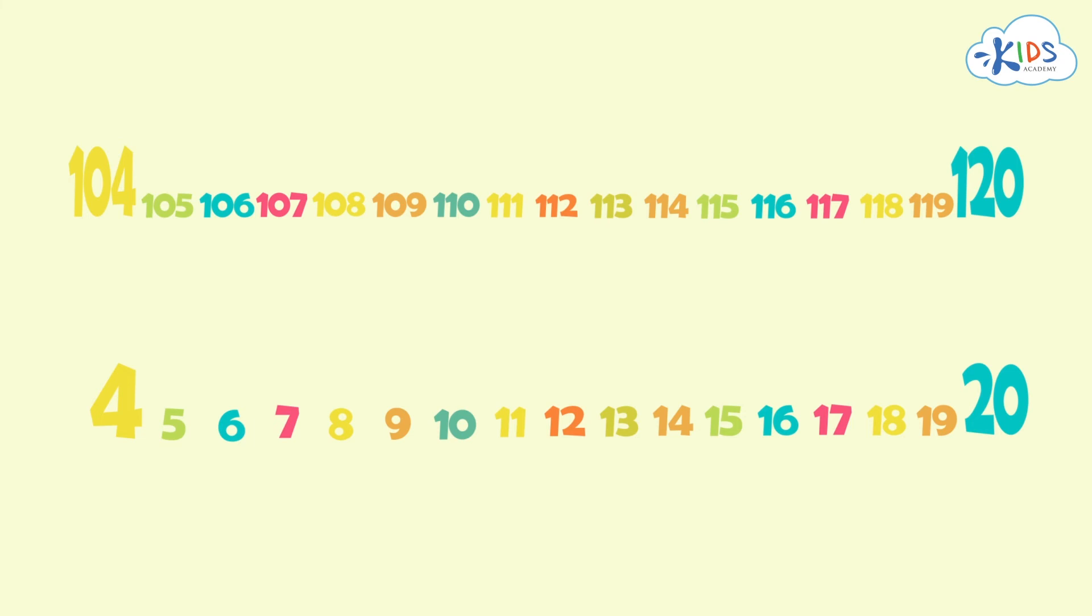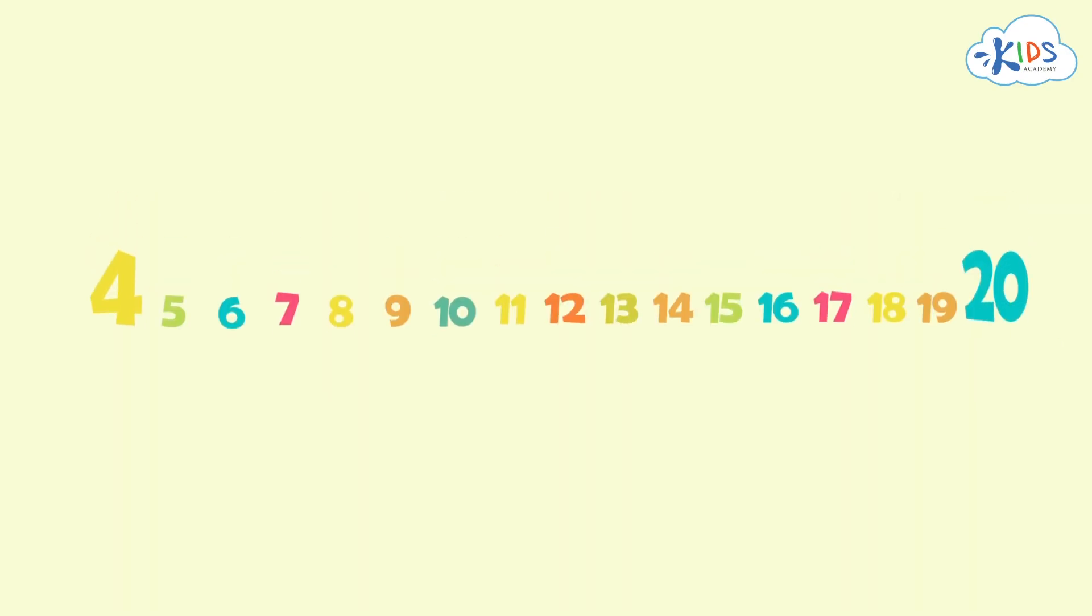Okay, here's the answer. Let's count from 104 to 120. We can follow the same pattern from when we count from 4 to 20. First, let's count from 4 to 20 to find out the pattern. Then, we'll use that pattern to count from 104 to 120. Let's get started.